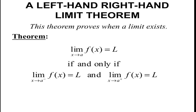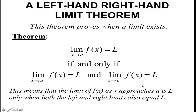Now we have what's called the left and right-hand limit theorem. This theorem proves when a limit exists. We know that the limit as x approaches A of some function equals L if and only if the left-hand limit as x approaches A equals L and the right-hand limit of f of x as x approaches A also equals L. The left and the right must be the same in order for us to say that the limit as x approaches A exists, and it will equal whatever value both the left and right approach.